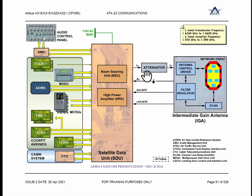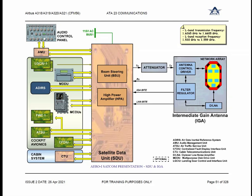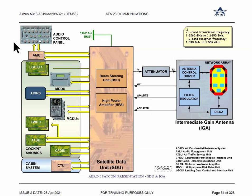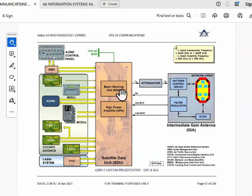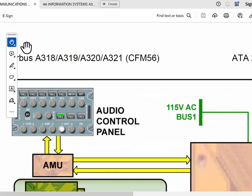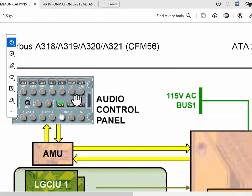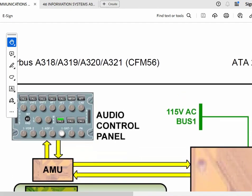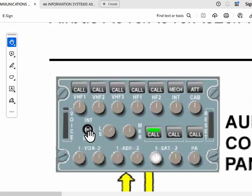For selection purposes you have the audio control panel. If you have seen the previous audio control panel, there was no SDCU selection. But in this version there is a selection for SDCU. This audio control panel is a different part number.